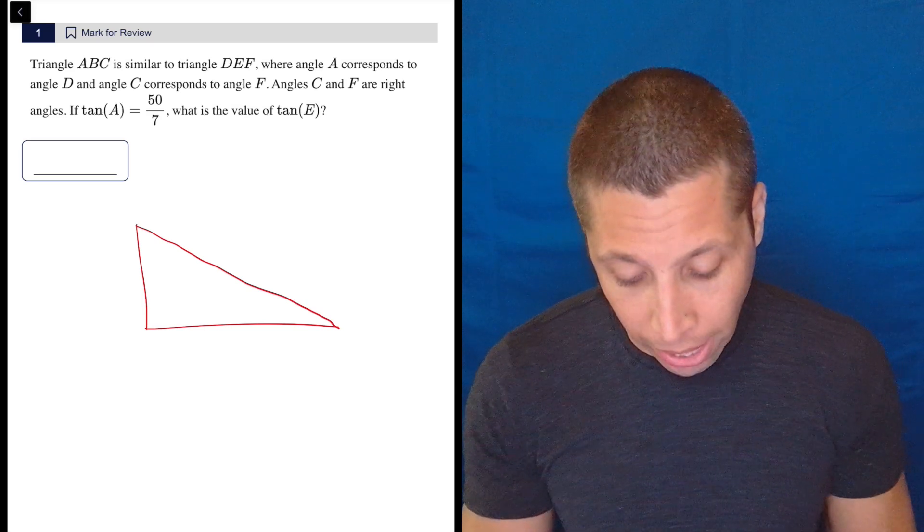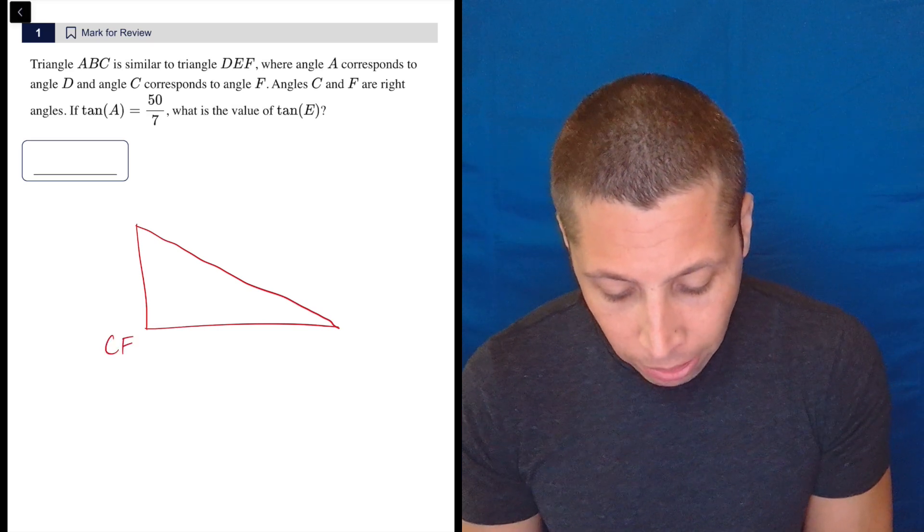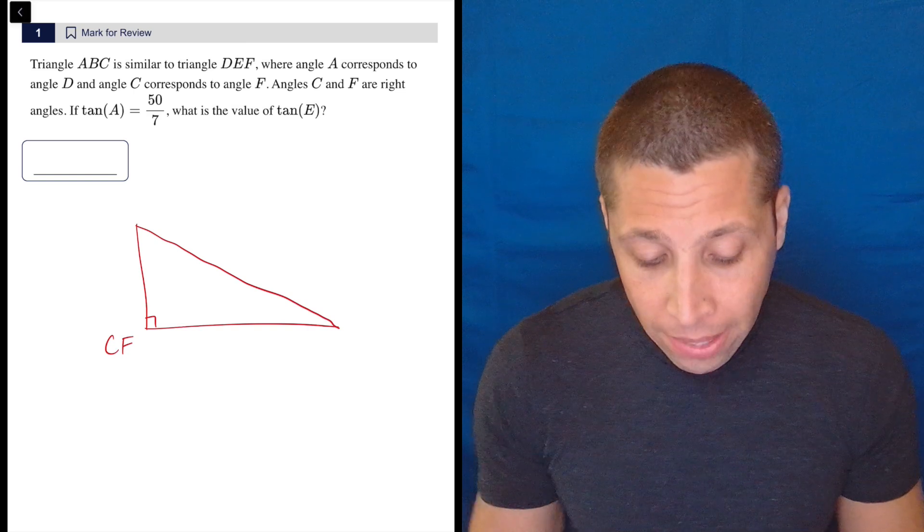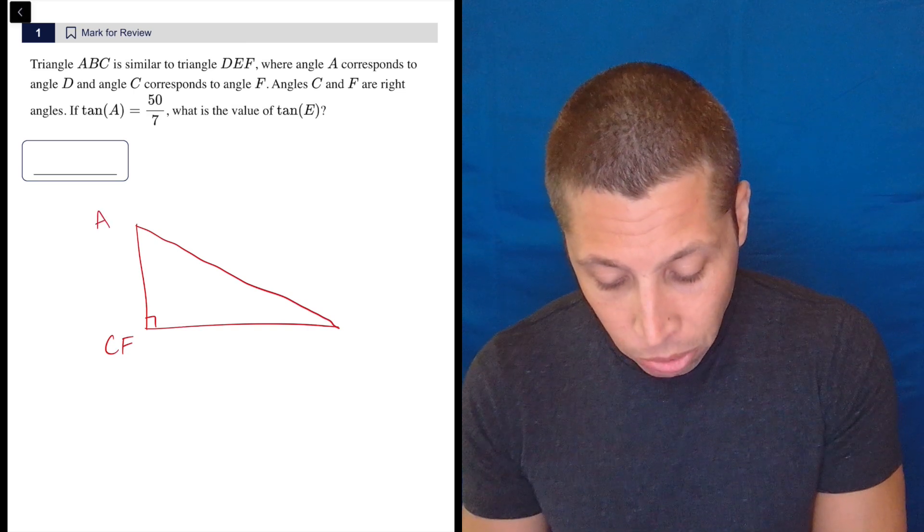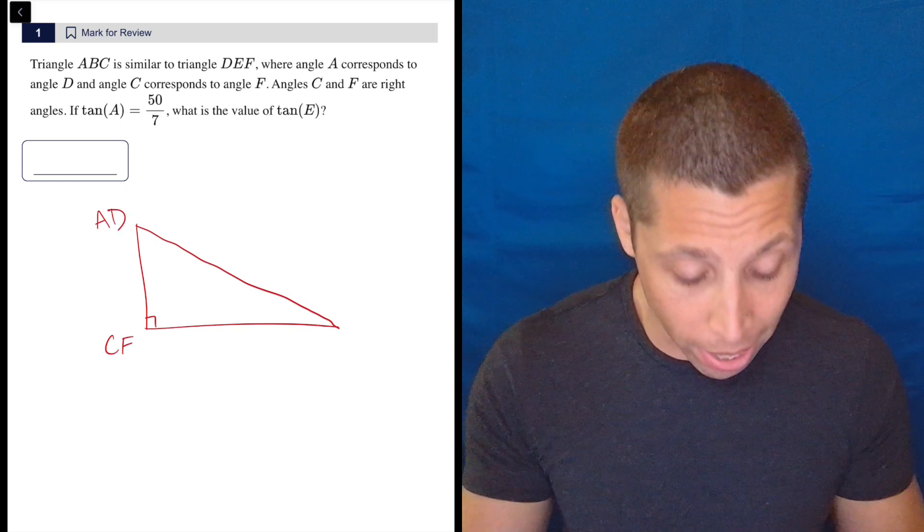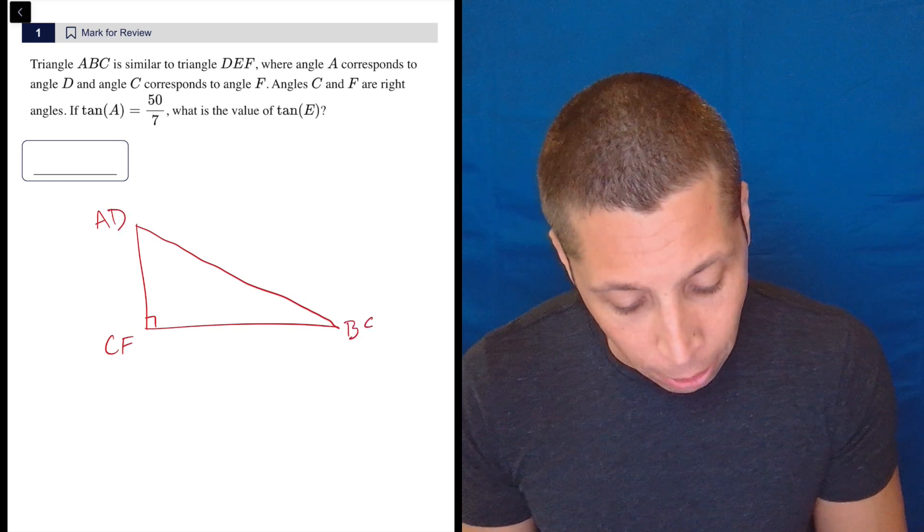They do say that C and F are the right angles, so I'm going to label the right angle as both C and F. They say angle A corresponds to angle D. It doesn't matter which corner I choose, but I'm going to choose A to be at the top, and that leaves us with B and E here.